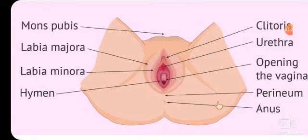During the menstrual cycle, the bleeding that occurs is lost through the aperture in the hymen. So the hymen is a particular membrane that protects the vaginal opening, but it definitely has an opening through which menstrual blood should be lost. The hymen covers the opening but maintains an aperture for menstrual flow to pass through.